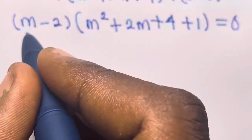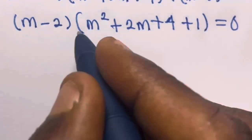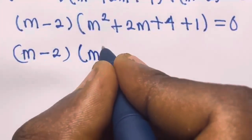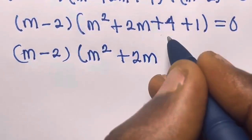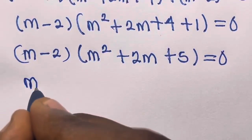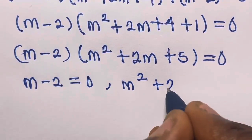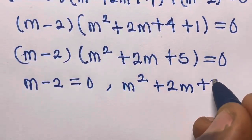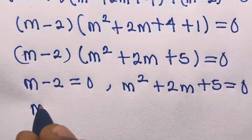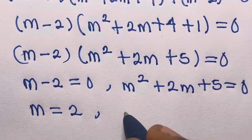We observe that M minus 2 is a common factor in both terms. Factoring it out gives M minus 2 times the quantity M squared plus 2M plus 4 plus 1 equals 0, which simplifies to M minus 2 times M squared plus 2M plus 5 equals 0.